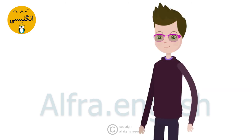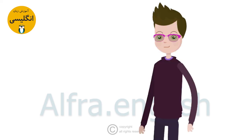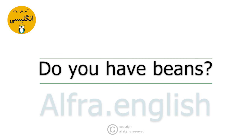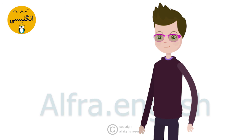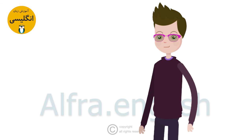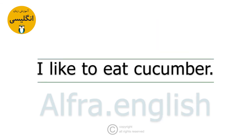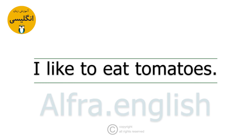چه نوع سبزی دارید؟ What vegetables do you have? لوبیا دارید؟ Do you have beans? گل کلم دارید؟ Do you have cauliflower? من دوست دارم ذرت بخورم. I like to eat corn. من دوست دارم خیار بخورم. I like to eat cucumber. من دوست دارم گوجه فرنگی بخورم. I like to eat tomatoes.